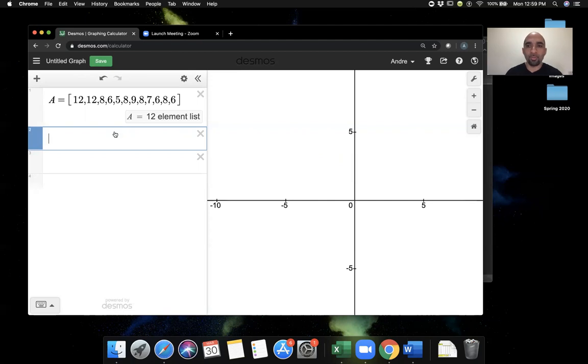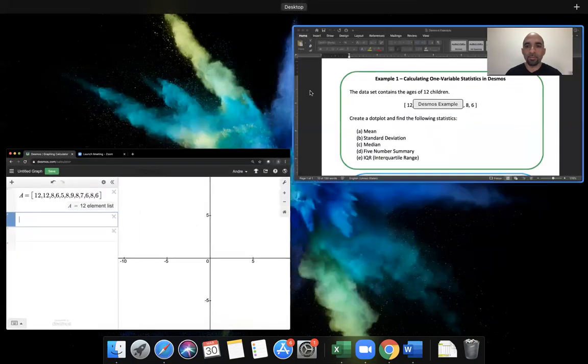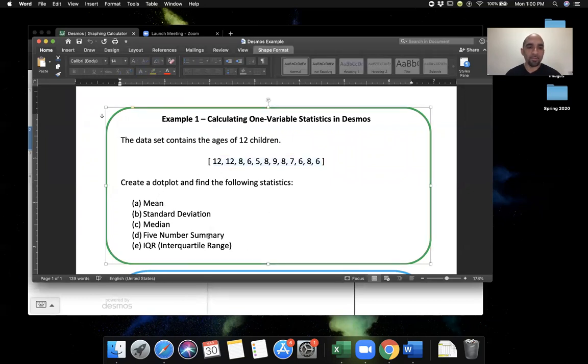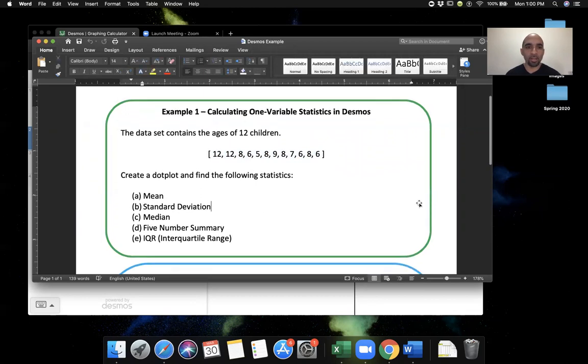Now we can proceed to solve the problems on the page. It says let's create a dot plot and find the mean, standard deviation, median, five number summary, and the interquartile range. We can do all of this in Desmos very quickly.